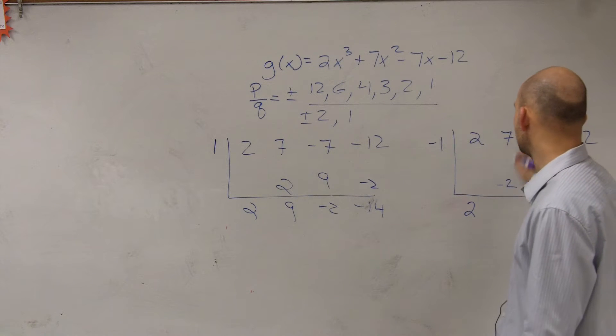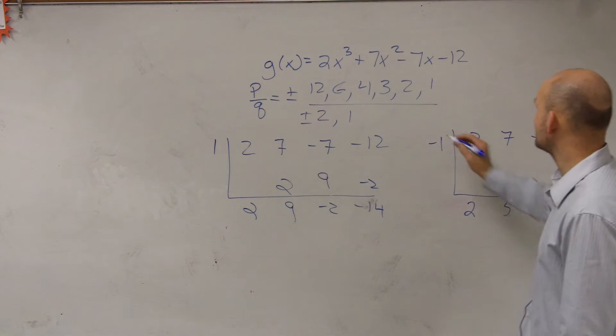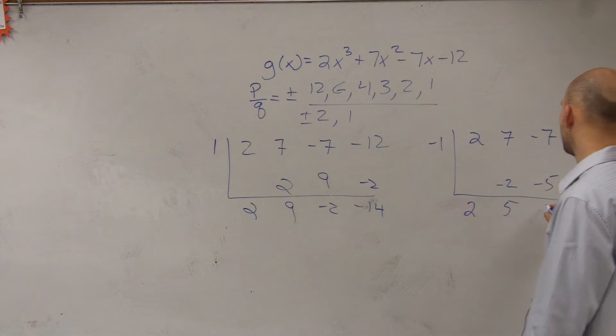2 times negative 1 is negative 2. 7 plus negative 2, positive 5. 5 times negative 1, negative 5. Negative 12 plus negative 5 is going to be a negative 12.